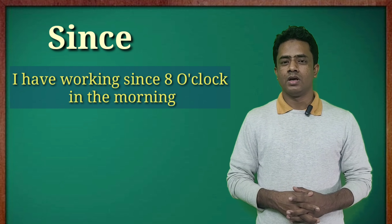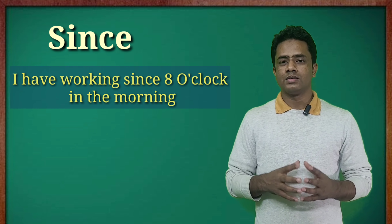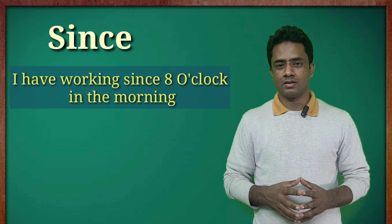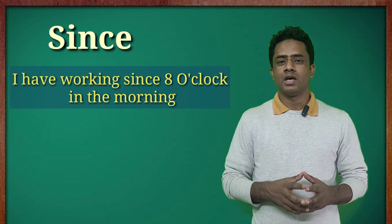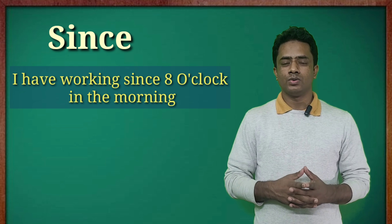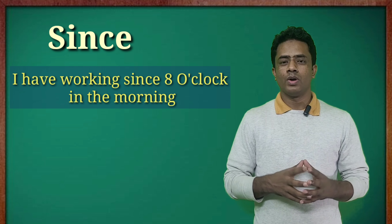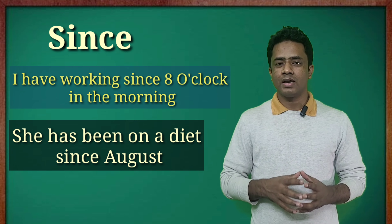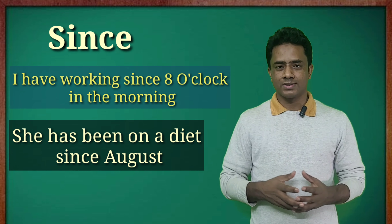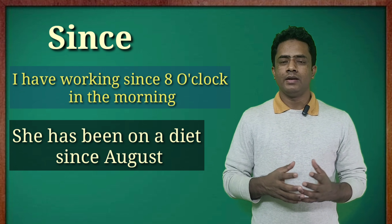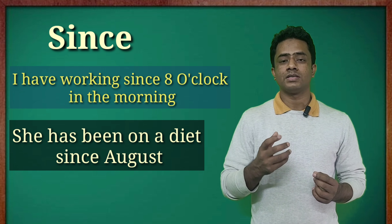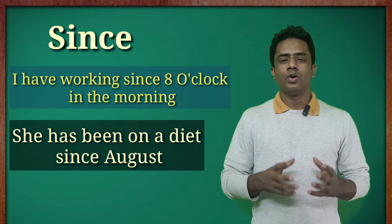The first sentence: I have been working since 8 o'clock in the morning. You'll notice that the specific time expression comes after since, and it shows when the person started working. The next sentence says: she has been on a diet since August. The specific time expression here is August, and it comes after since. It shows when she started dieting.